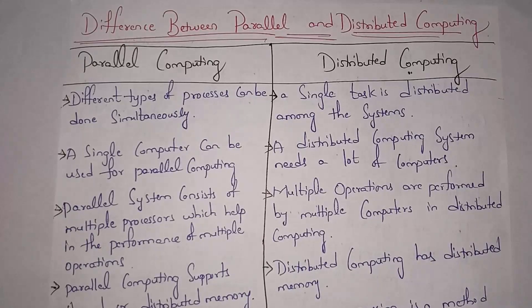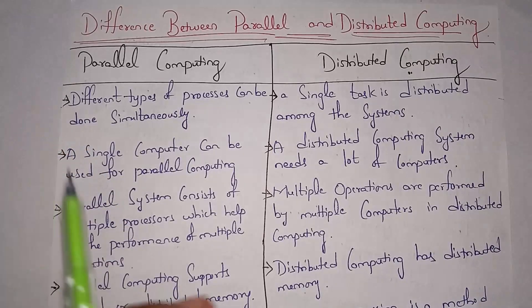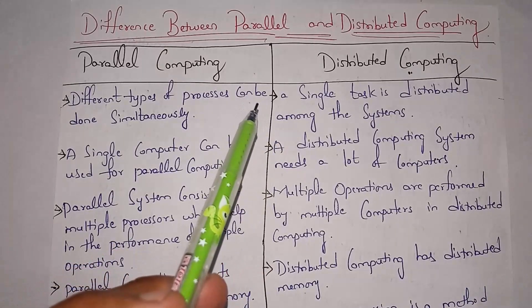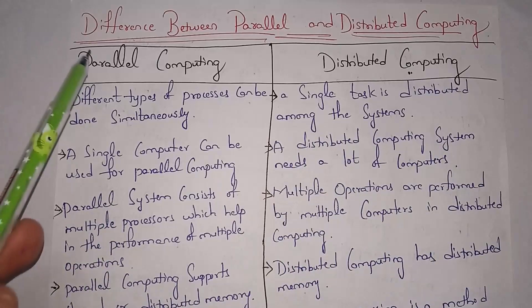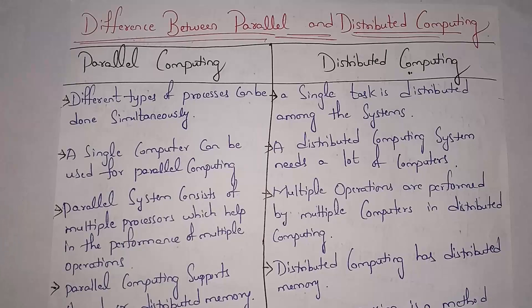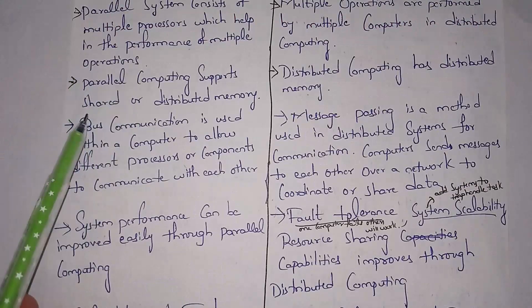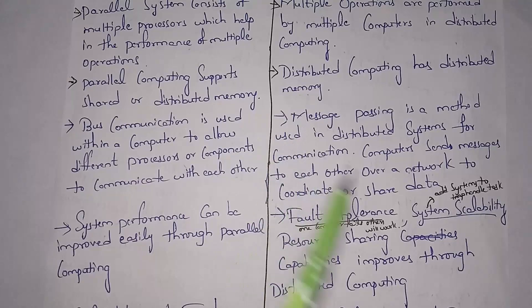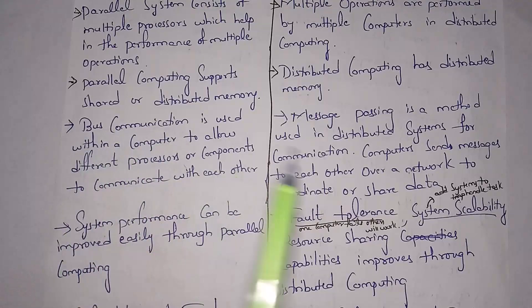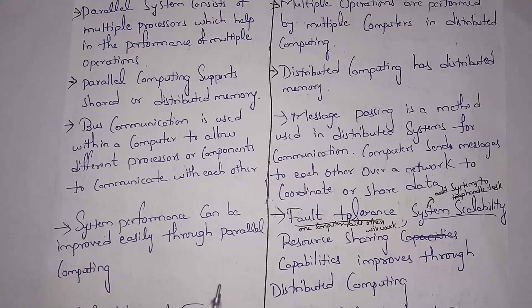The difference between parallel and distributed computing: in parallel computing, multiple processors inside a single CPU share work, while in distributed computing a single task is distributed among multiple systems. Parallel computing uses only one computer with multiple processors, whereas distributed computing involves many computers. Parallel computing uses shared and distributed memory, while distributed computing uses only distributed memory. Parallel computing uses bus communication, while distributed computing uses message passing.